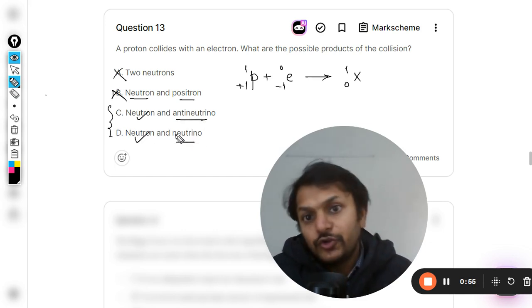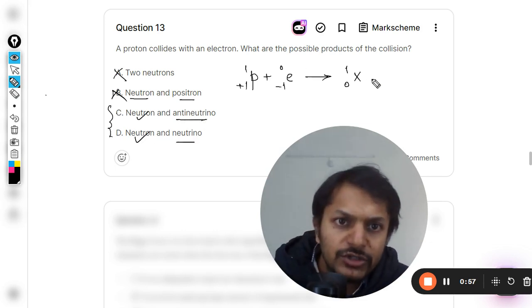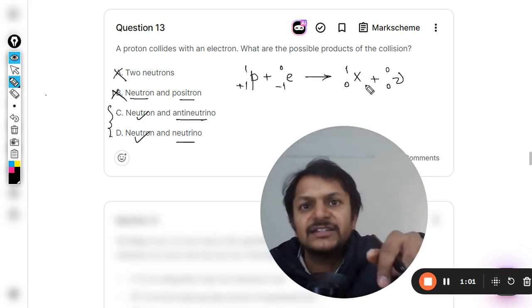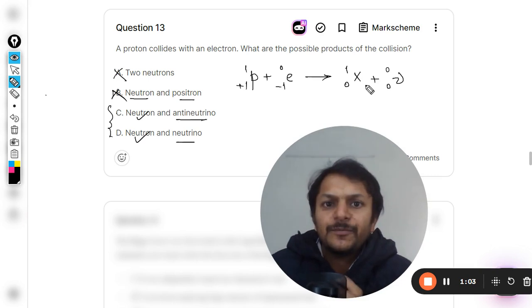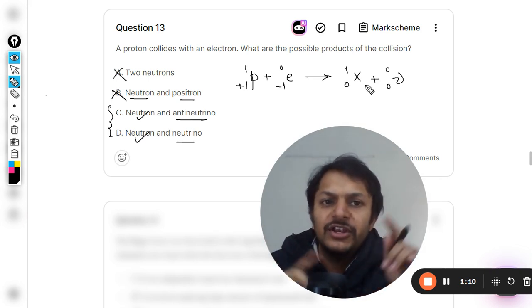There is an equal chance of neutrino and anti-neutrino because in both of the cases, you see, the mass number is zero as well as the charge is zero. So we cannot understand it from this point of view, like what is the mass number and what is the charge number, because even in anti-neutrino as well as in neutrino, those two things are zero.